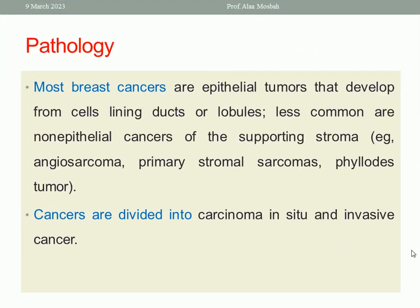Most breast cancers are epithelial tumors that develop from cells lining ducts or lobules. Less common are non-epithelial cancers such as angiosarcoma, primary stromal sarcoma, and phyllodes tumor coming from breast stroma. Cancer is divided into carcinoma in situ and invasive cancer. Carcinoma in situ has no invasion to stroma — there is proliferation of cancer cells within ducts or lobules without invasion of stromal tissue. You have two types: either ductal carcinoma in situ or lobular carcinoma in situ.